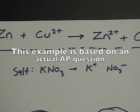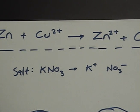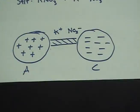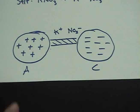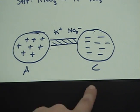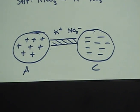As all salts do when in solution, it splits apart into a positive ion and a negative ion — in this case a potassium ion and a nitrate ion. Here I have a top view of the battery.